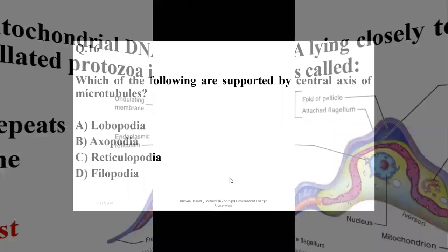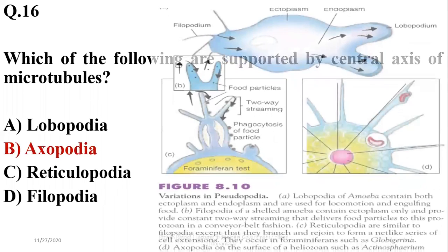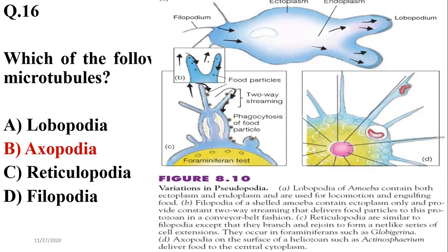Question sixteen: the pseudopodia supported by a central axis of microtubules are axopodia. In diagram A, the lobopodium structure contains both ectoplasm and endoplasm and is used for locomotion and engulfing food. Filopodia belong to shelled amoeba and contain ectoplasm only, as shown in diagram B.